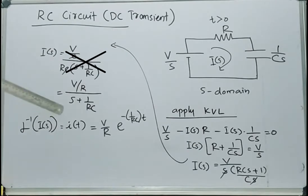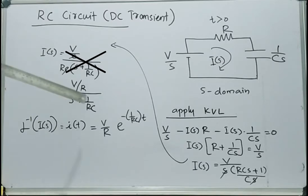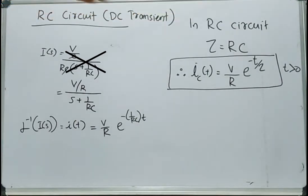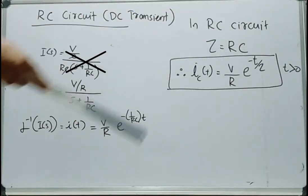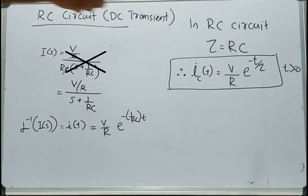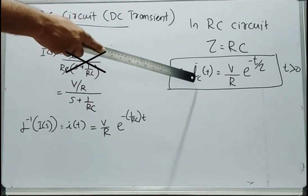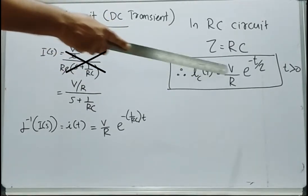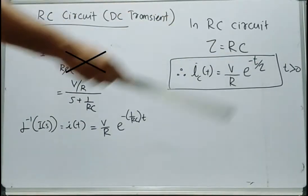There is no need for partial fraction expansion; directly find the inverse Laplace of this equation to obtain I(T). After taking the inverse Laplace of this equation, we can obtain I(T) as (V/R) times e raised to minus (1/RC) times T. In an RC circuit, the time constant tau equals R times C. Considering that time constant, the current through the circuit is I(T) = (V/R) times e raised to minus T/tau, for T greater than 0.